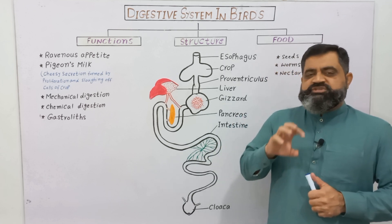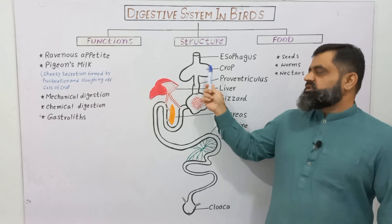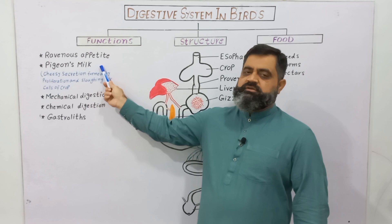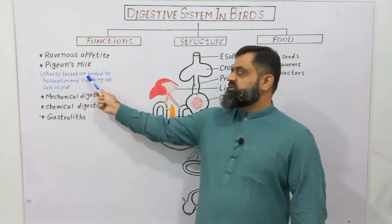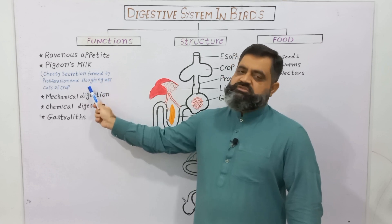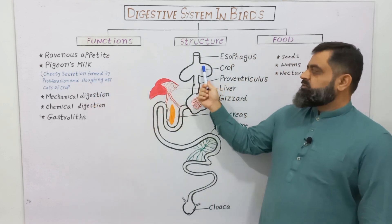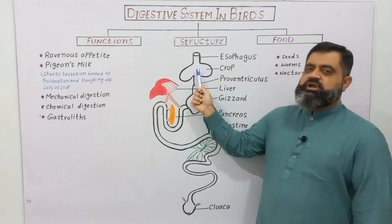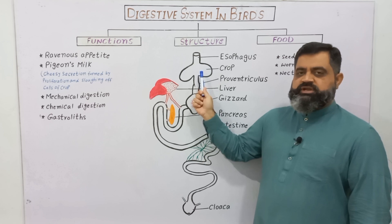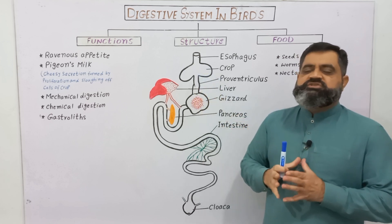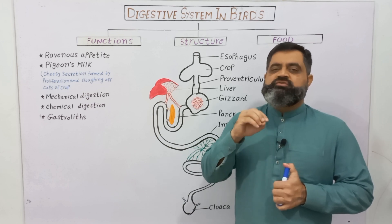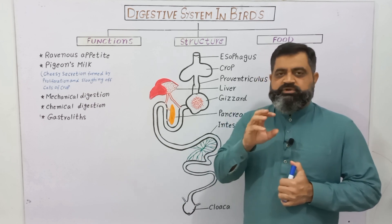In the crop of pigeons, a cheesy secretion is produced which is known as pigeon's milk. Pigeon's milk is formed by the proliferation and sloughing of the cells of the crop wall. This softening and sloughing of cells creates a cheesy mixture known as pigeon's milk, which they feed to their young ones.